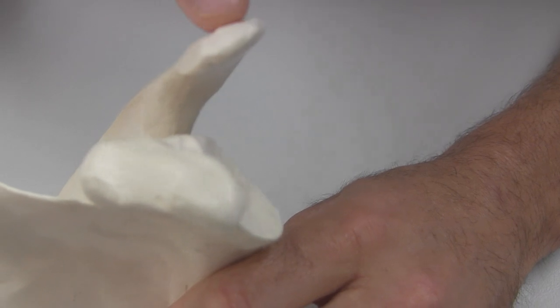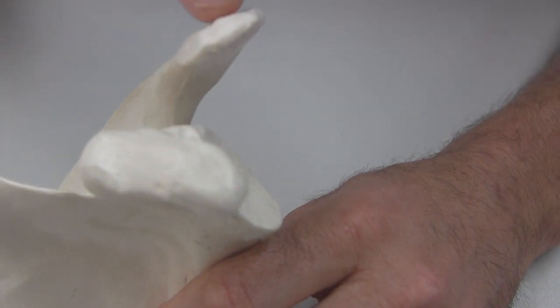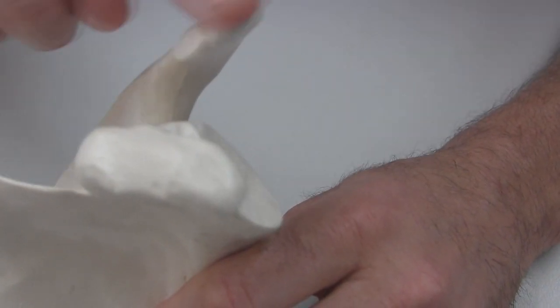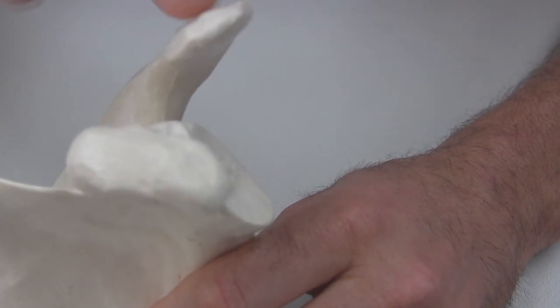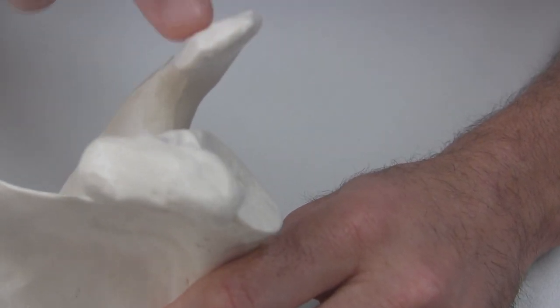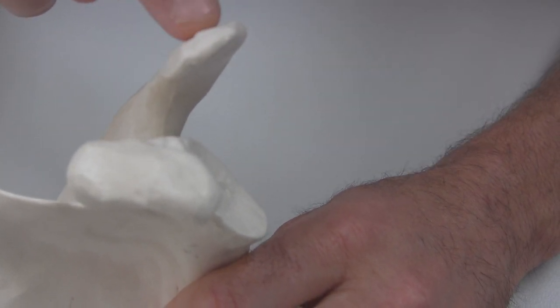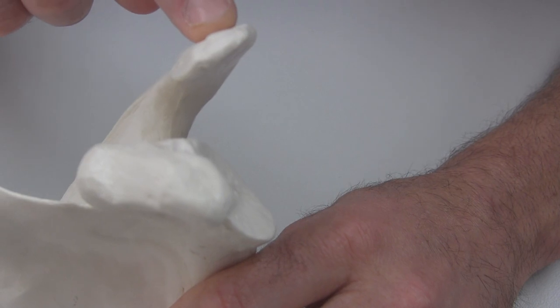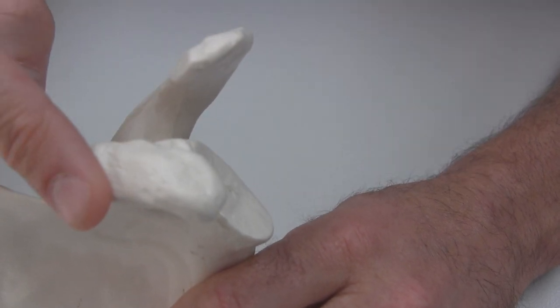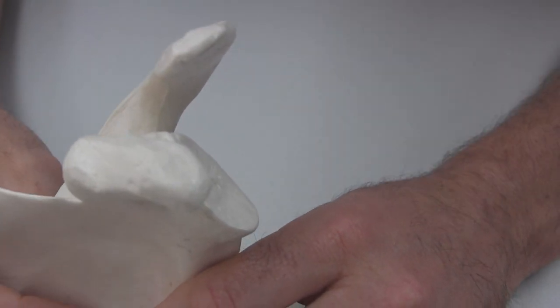Slightly superior and posterior to this, so up and back from that coracoid process, is another process called the acromion. Very important, particularly because there's a joint that takes place here, and there's also a lot of ligaments that attach to the acromion. So these two things, the coracoid process and the acromion, are very important to remember.